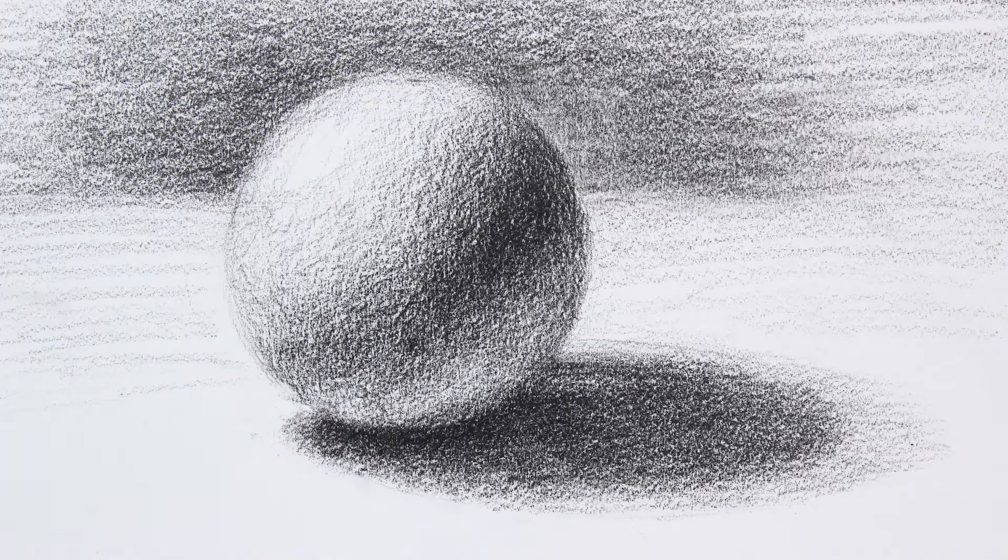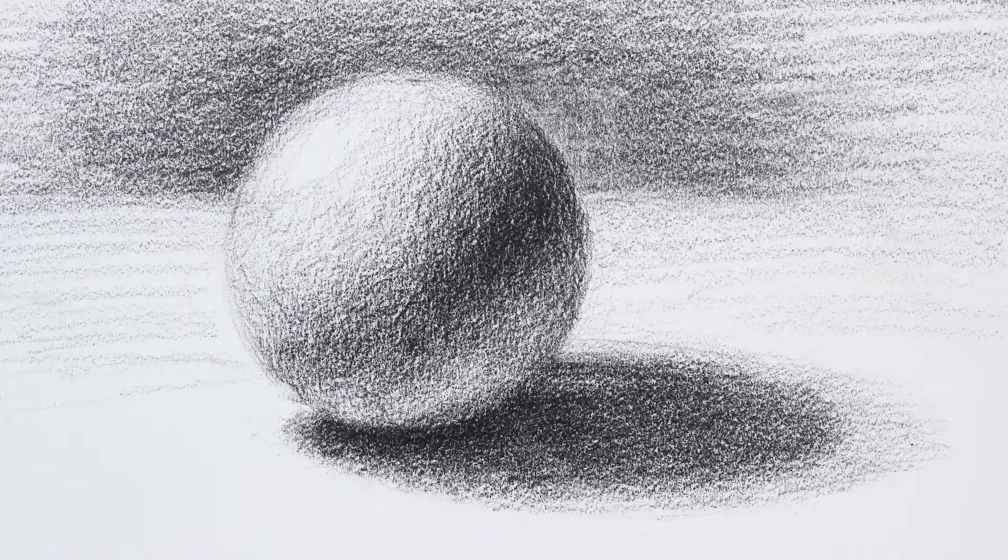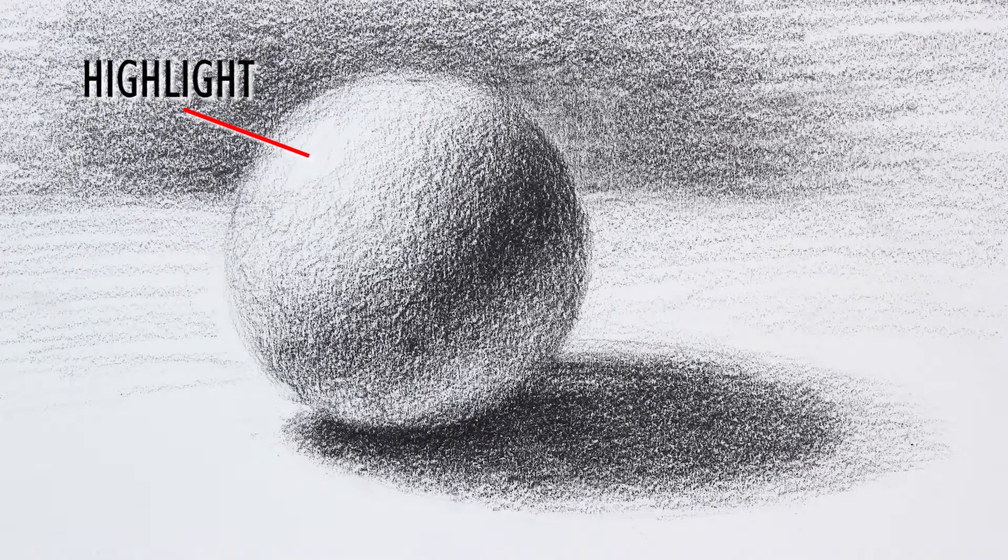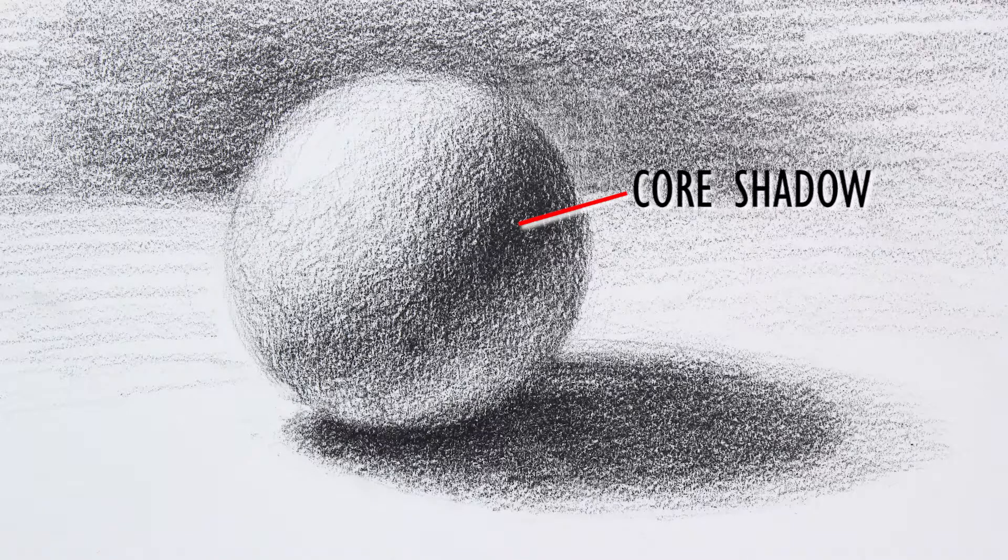Now when we look at the sphere, we can divide it into two areas of light and shadow. Within the light area, we have the highlight. This is the lightest part of the form and is actually a reflection of the light source. Within the shadow side, we have two distinct areas of value. The core shadow is the darkest area within the form shadow. On this sphere, we see it toward the center and upper right edge.